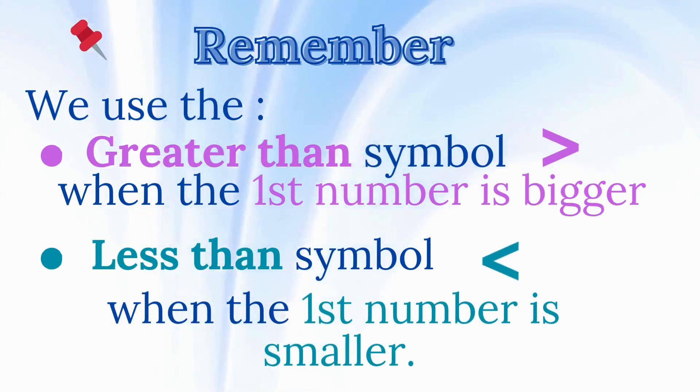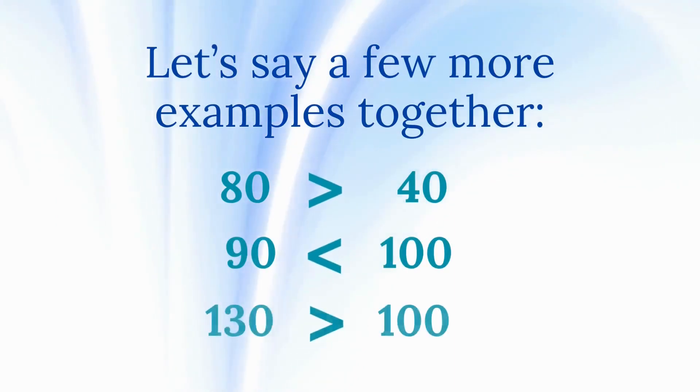Remember this. We use greater than when the first number is bigger. We use less than when the first number is smaller. Let's say a few more examples together: 80 is greater than 40; 90 is less than 100; 130 is greater than 100.